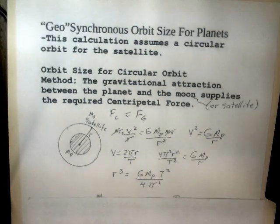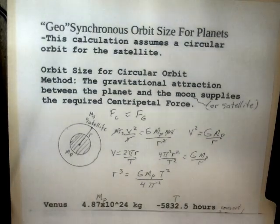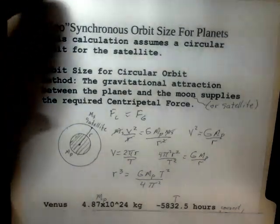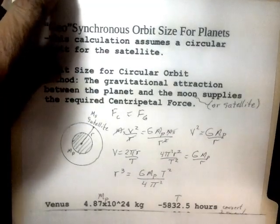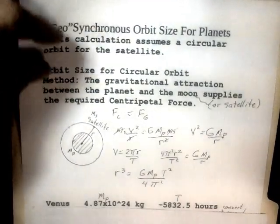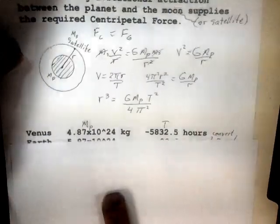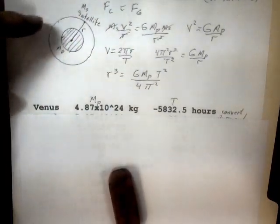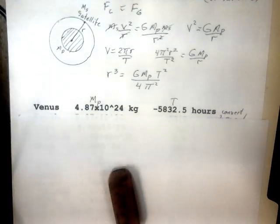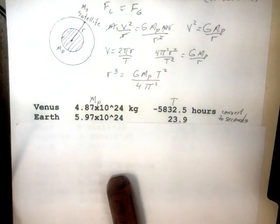Taking a look at some facts about objects in our solar system, starting with Venus: the mass of Venus is 4.87 times 10 to the 24th kilograms, and its spin is retrograde, so I put a minus sign here. It's a slow spin, 5,832 hours, and that has to be converted to seconds. For the earth, mass of 5.97 times 10 to the 24th kilograms.